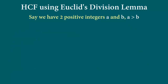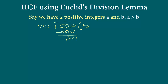This sounds complicated, so let's apply Euclid's division lemma to the two examples we did. The second example was finding the HCF of 100 and 524 — we know the HCF is 4. The first step is to divide 524 by 100. When we do that we get quotient 5, since 5 times 100 is 500, and then subtracting we get remainder 24. Is the remainder 0? It is not, so we move on.